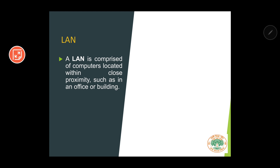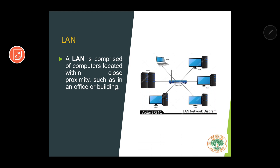Let's say there is an office with three floors and around 20 computers spread across all three floors. If you want to connect all the computers of that particular office, you will be using LAN. The geographical area or range of LAN is very small — you can typically connect computers located in close proximity, such as within an office or building. This is a general diagram of a LAN network.